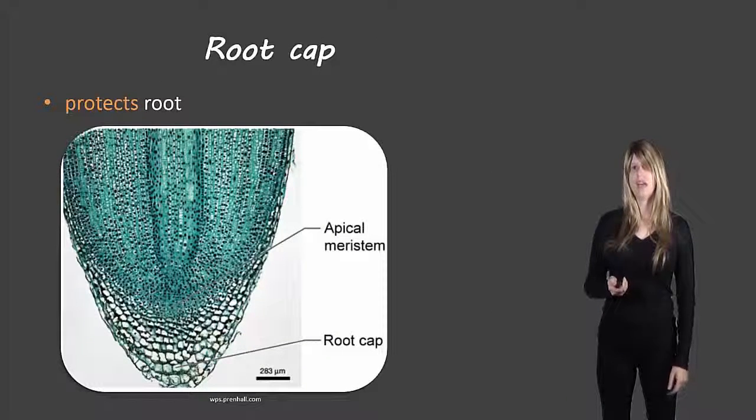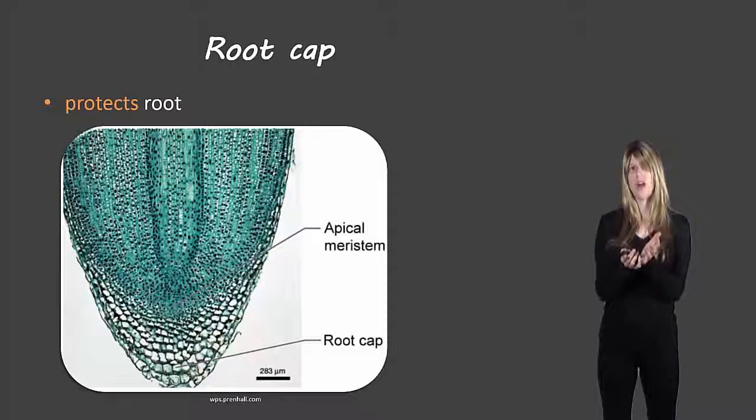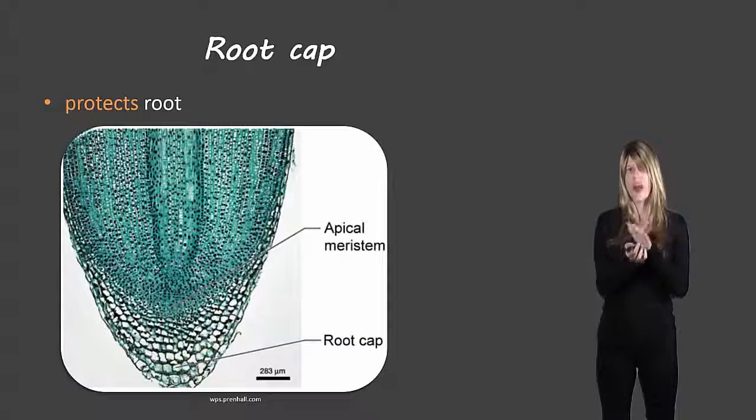And then finally the root cap protects the bottom of the root. So it's more compact types of cells that are at the bottom of the root and protecting it.